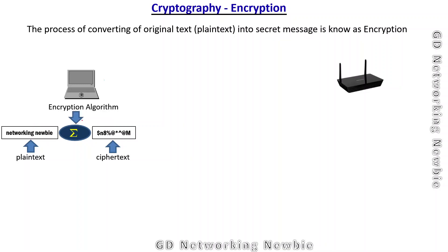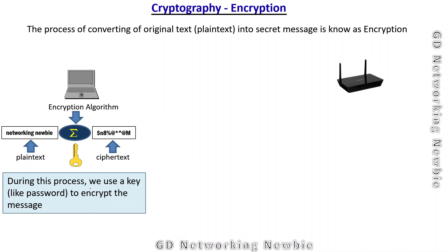This process is known as the encryption algorithm. The encryption algorithm is a mathematical formulation with logic that converts plain text into ciphertext. During this process we also use a key, which is fed into the algorithm to encrypt the message. That key could be like a password or any string — for example, 'xyz$' — so this is the key being used.